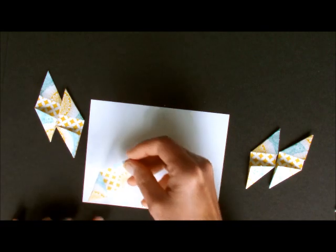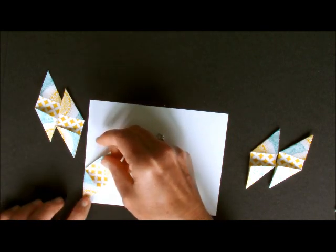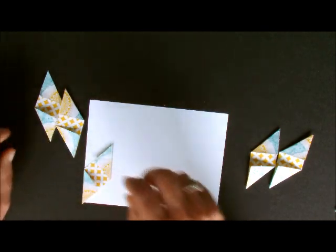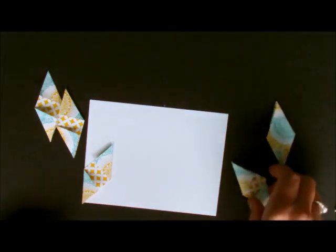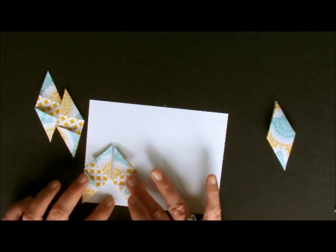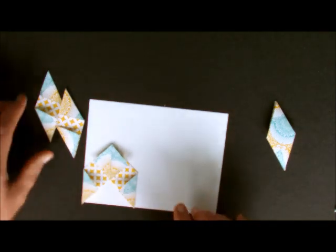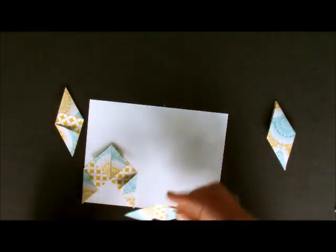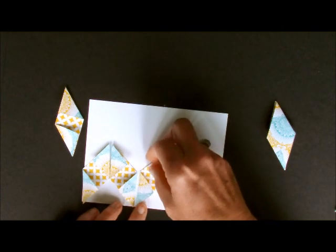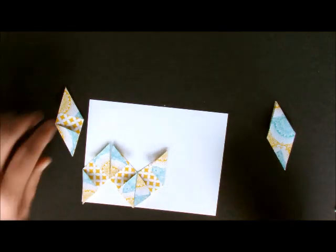You see how this folds this way? What you're going to do is you're going to lay this right here on the corner. Then you're going to take a left to right and you're going to add it right here. See how one goes right to left, the other one goes left to right?